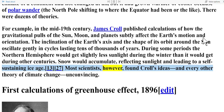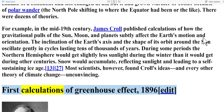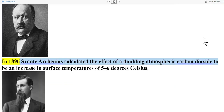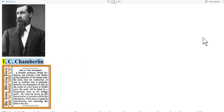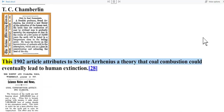Most scientists, however, found Croll's ideas and every other theory of climate change unconvincing. First calculations of greenhouse effect — 1896. In 1896, Svante Arrhenius calculated the effect of a doubling of atmospheric carbon dioxide to be an increase in surface temperatures of five to six degrees Celsius. A 1902 article attributed to Arrhenius a theory that coal combustion could eventually lead to human extinction.